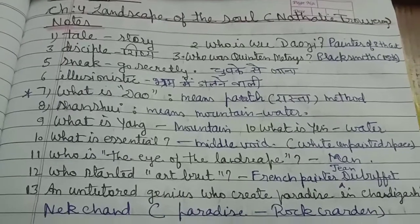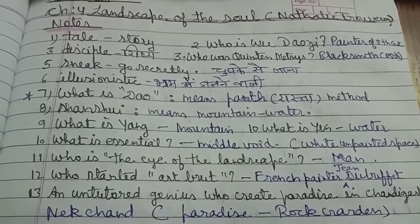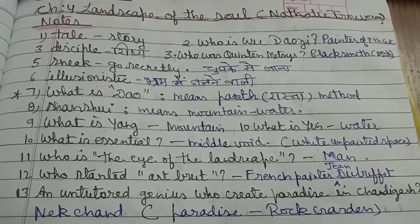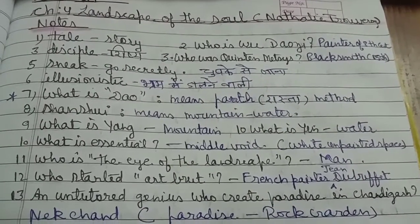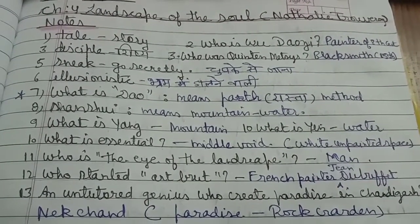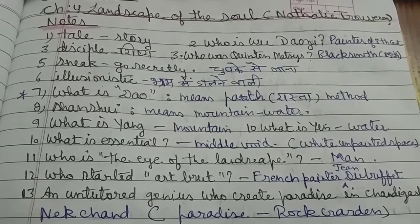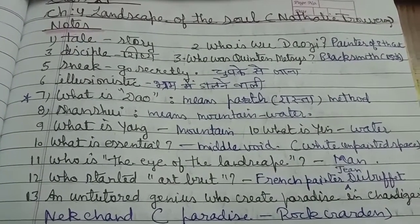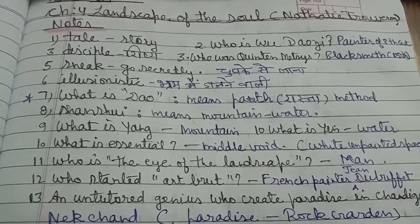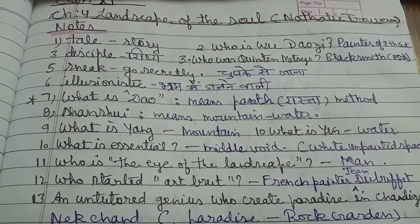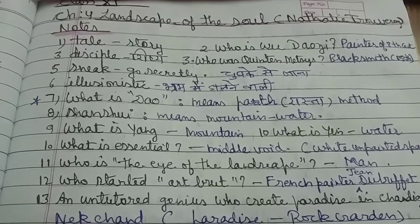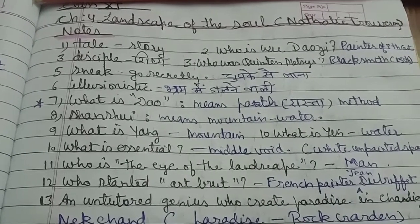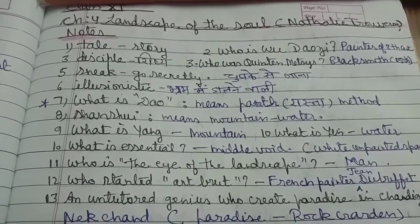We will start with notes. First word is tale — tale means story. Second, who is Wu Daozi — a painter of the 8th century. Who was Quentin Messys — a blacksmith of the 15th century. Sneak means to go secretly, chupke se kahi ana jana.